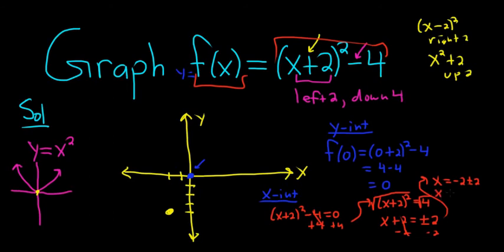And now we have two cases. We have x equals negative 2 plus 2. So that's 0. And the other one is negative 2 minus 2. That's negative 4. So that would be over here.